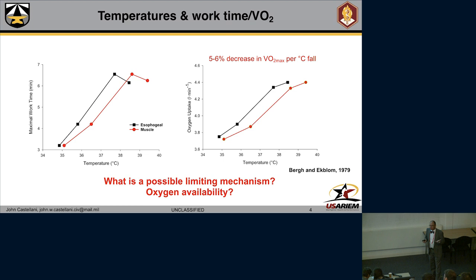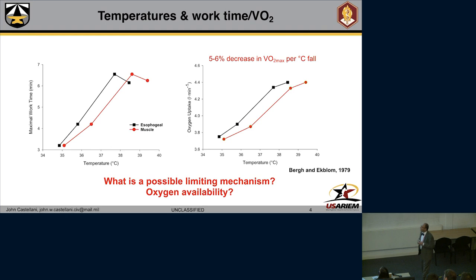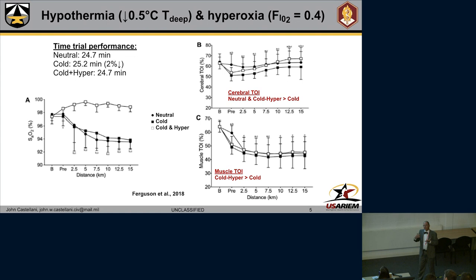That leads to an interesting question: why? What are some possible limiting mechanisms for what's observed in these studies? One question asked is whether it's oxygen availability — is it just a limiting ability to move oxygen to the working muscle? This was studied recently, just a year ago, from the laboratory of Stephen Chung, who looked at the effect of hypothermia combined with giving volunteers an increase in oxygen — percent oxygen up to 40%, FiO2 of 0.4 — essentially to see if oxygen availability was causing this change in aerobic performance.